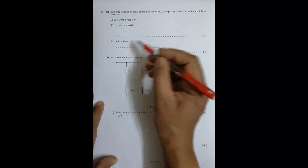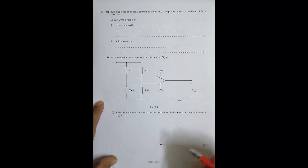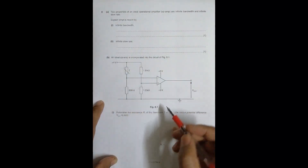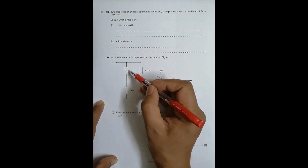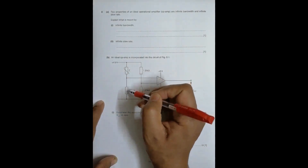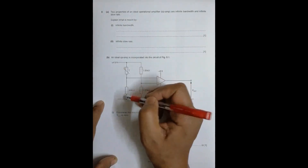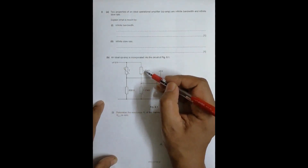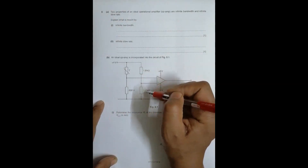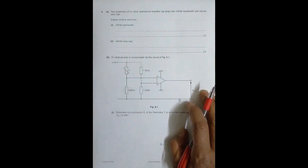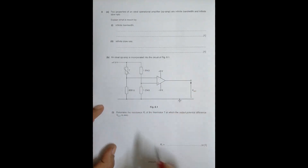In the second question we have an ideal op-amp circuit. There is a thermistor and an 800 ohm resistor in series, forming a voltage divider for a 4 volt supply. Similarly, a 1.8 kilohm and 1.2 kilohm resistor form another voltage divider from the same input source.